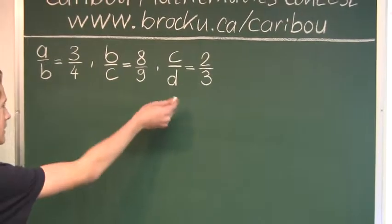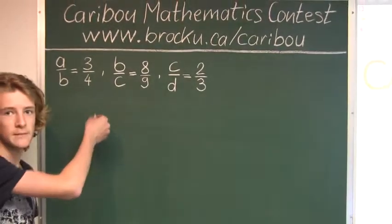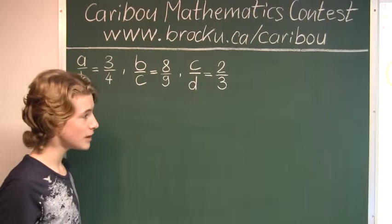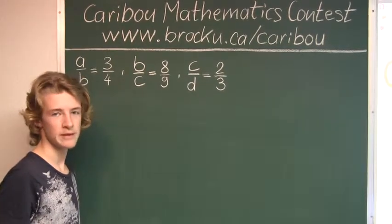The question already gives us the values of these three fractions, as shown here. So what we are trying to find out is what AD over B squared is.